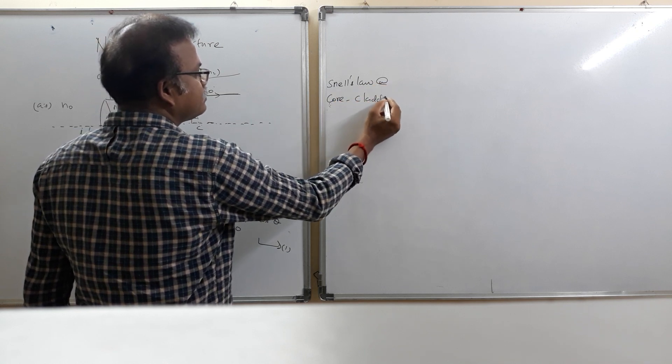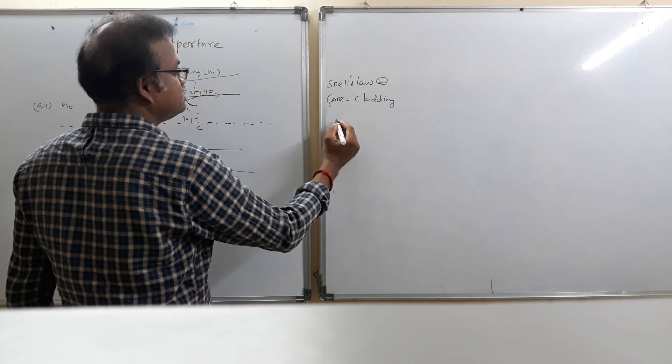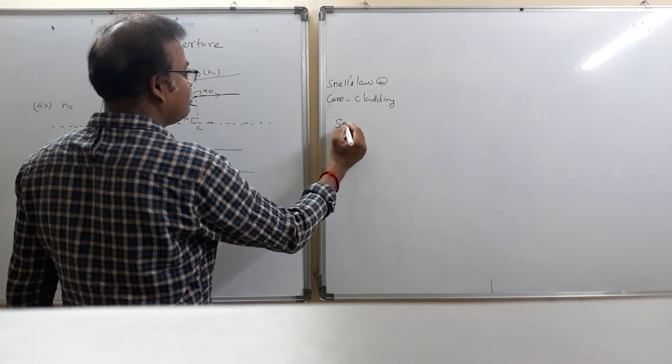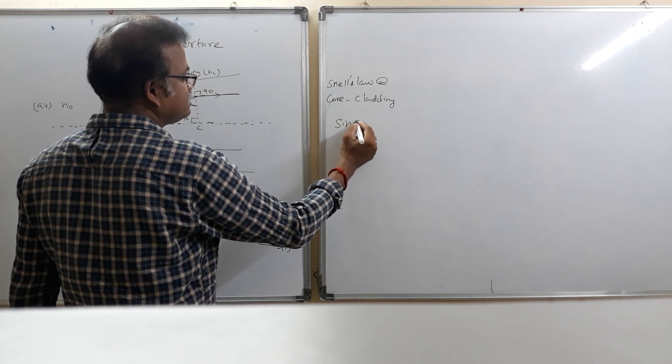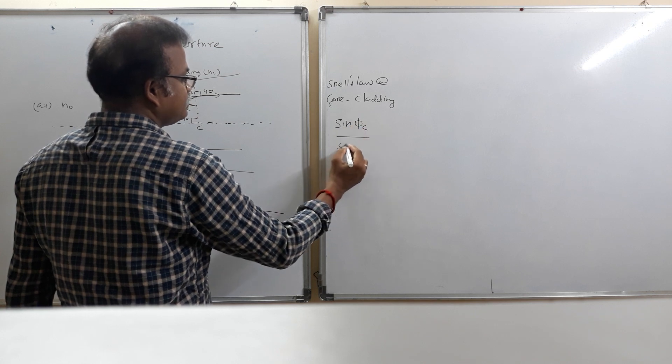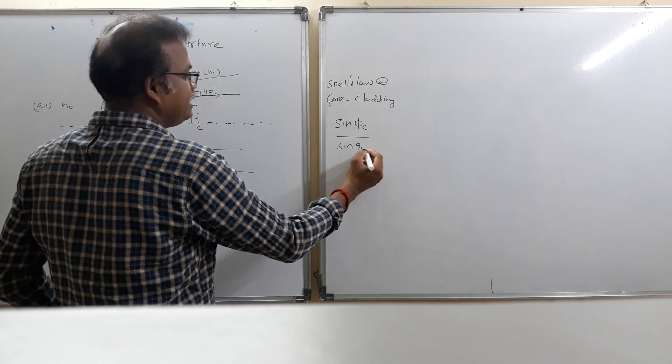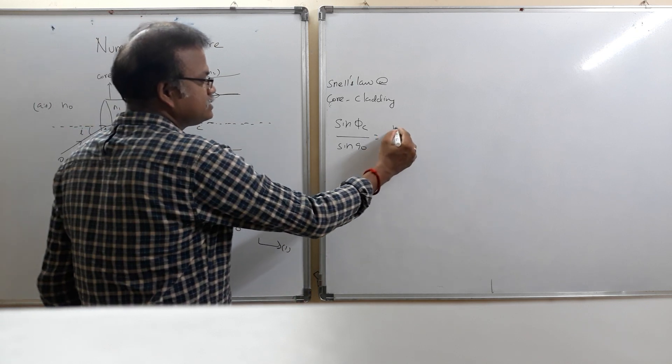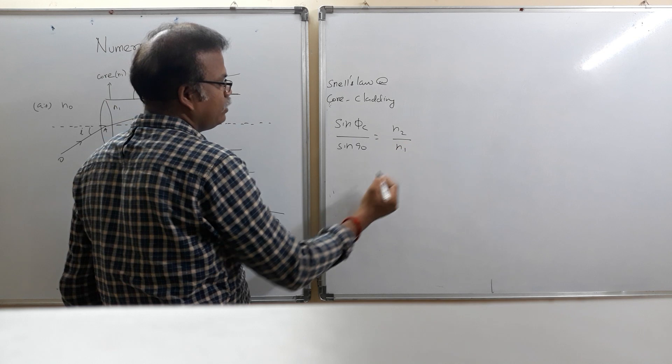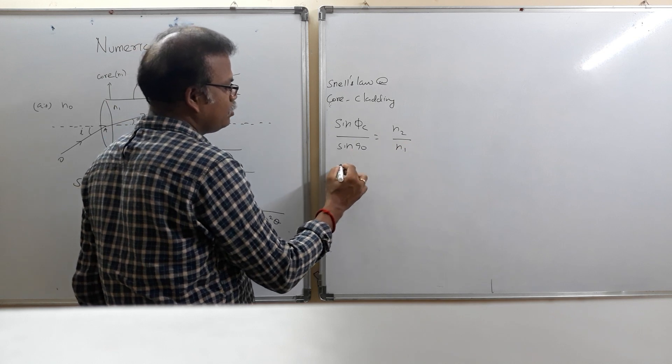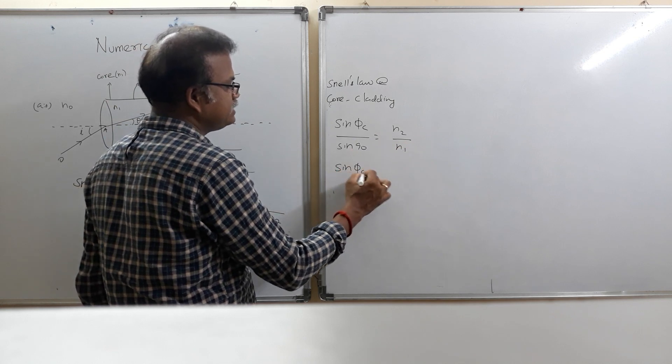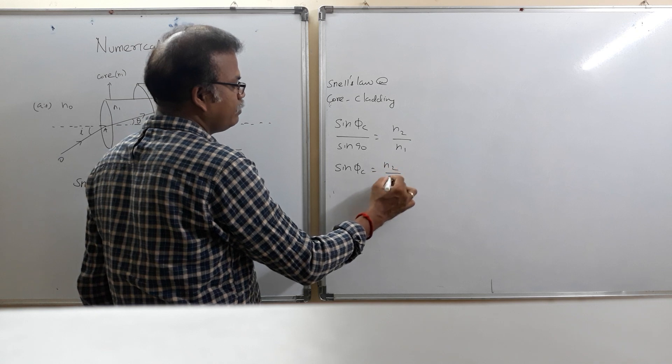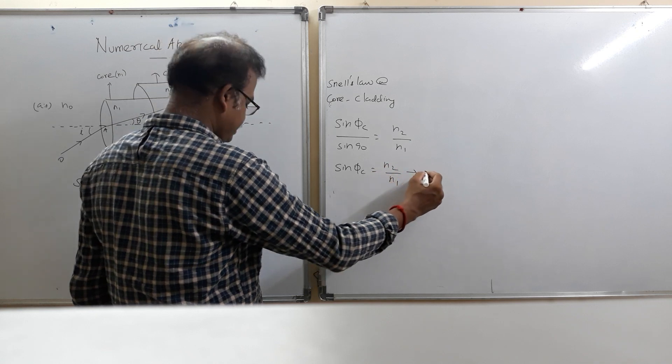cladding interface. Sin of the angle of incidence phi c, sin 90 is equal to N2 by N1. Again, the denser medium is N1, rarer medium is N2. Sin 90 is equal to 1. Sin phi c is equal to N2 by N1. This is equation number 2.